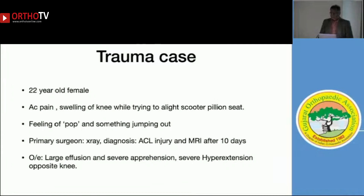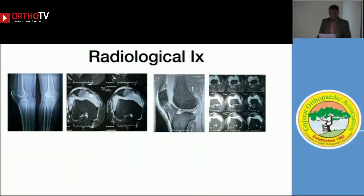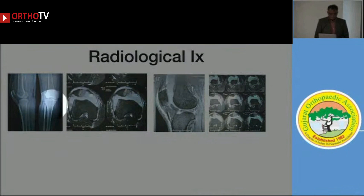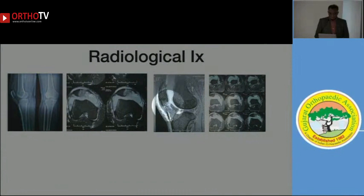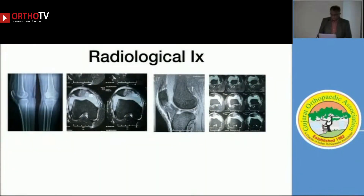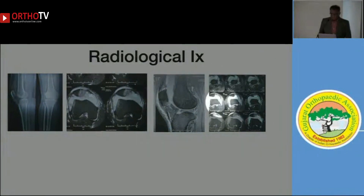The primary surgeon saw the X-ray and suspected an ACL injury, planning MRI after 10 days. When I examined her, there was a big effusion in the knee, severe hyperapprehension, and a lot of hyperextension in the opposite knee. The X-ray looked innocuous — very normal — but the MRI showed a big bone marrow edema in the medial part of the patella at the MPFL, with blood present. The trochlea looked quite okay, only slightly dysplastic.